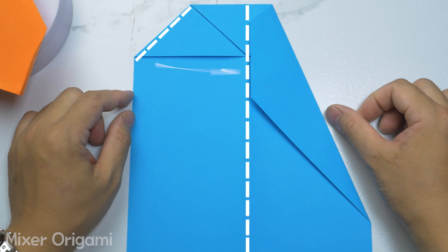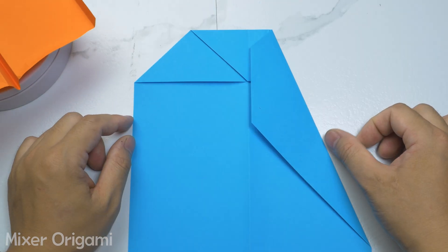Step 5. Do the same with the other side. We have now folded two wing parts of the airplane.